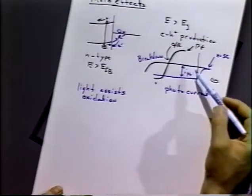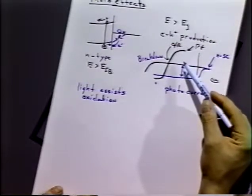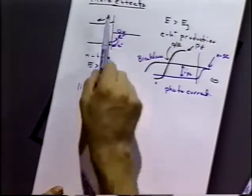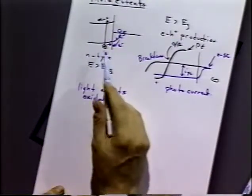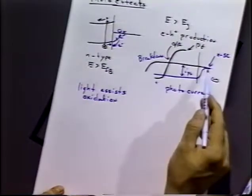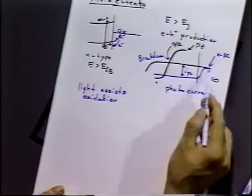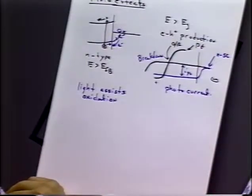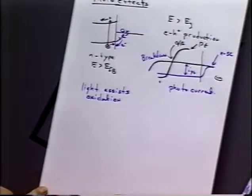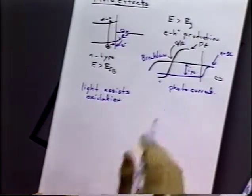So what that does is that the light effectively decreases the potential at which that oxidation is required. The amount of current that you get is going to be related to the intensity of the light, because that's going to determine how many holes are going to be produced in that particular system. And the frequency of the light is going to give some indication of where that wave starts.